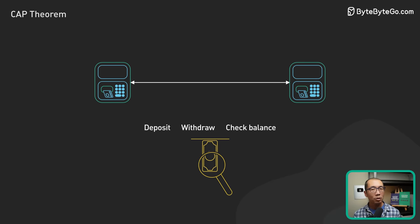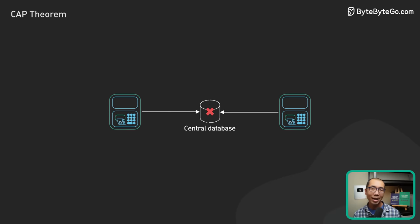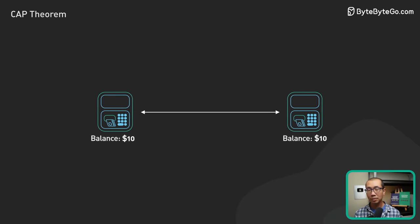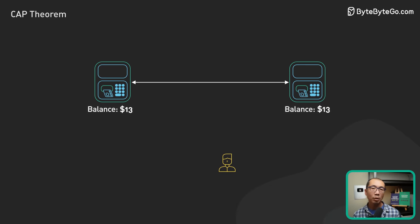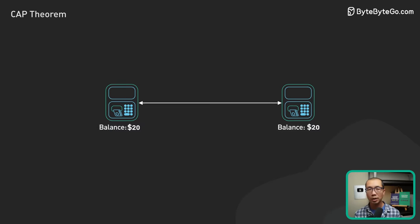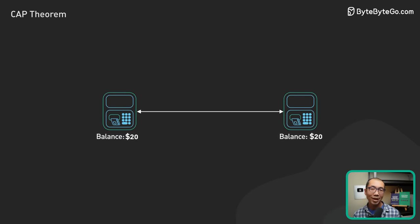No matter what happens, the balance should never go below zero. There is no central database in this bank to keep the account balance. It is stored on both ATMs. When a customer uses an ATM, the balance is updated on both ATMs over the network. This ensures that the ATMs have a consistent view of the account balance.